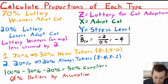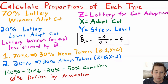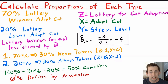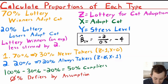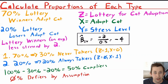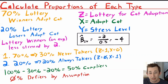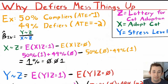If 70% of lottery winners adopt, then 30% do not — those must be never takers, since they won't adopt even when allowed. So 30% are never takers. 20% of lottery losers adopt anyway — those are always takers like Bill. With 30% never takers, 20% always takers, and 0% defiers, the remaining 50% must be compliers. The IV estimate is the effect of Z on Y (−2) divided by the compliance rate (0.50), giving an IV estimate of −4.